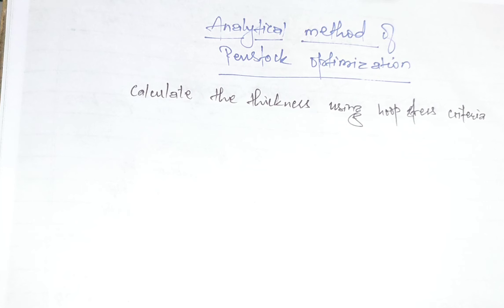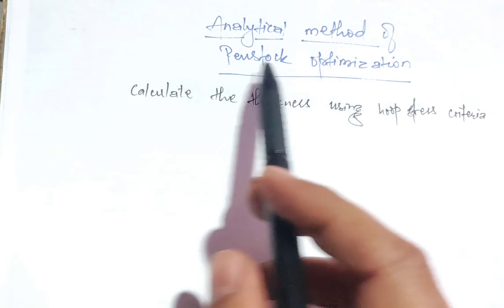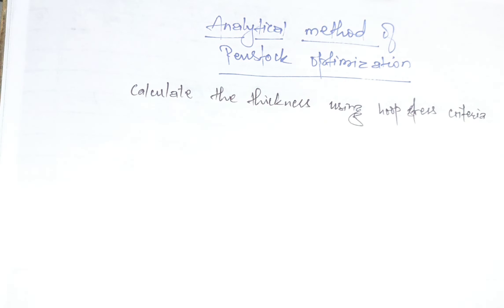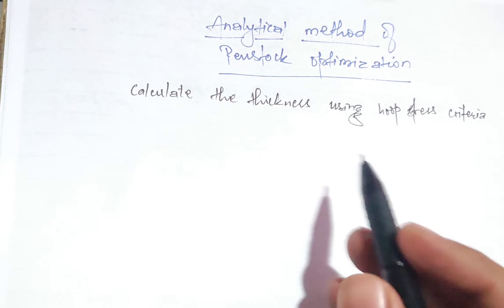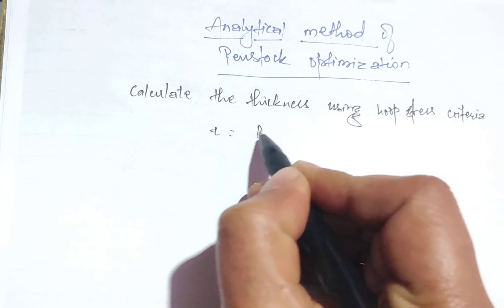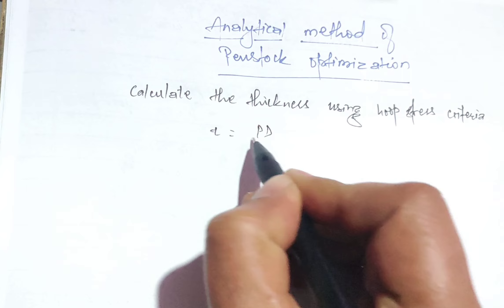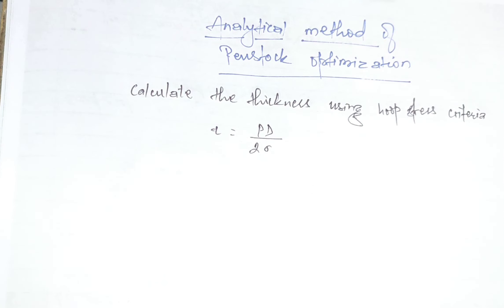Hello everyone, welcome to this lecture. We are going to talk about the analytical methods of penstock optimization. In the process of penstock optimization, first we will calculate the thickness of the penstock using the hoop stress criteria, that is t equals p·d divided by twice of sigma.